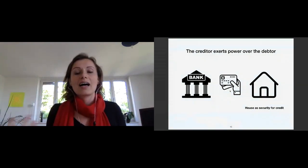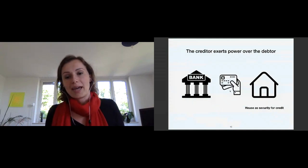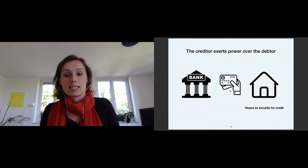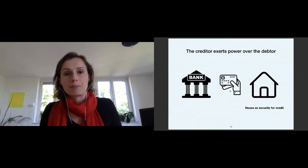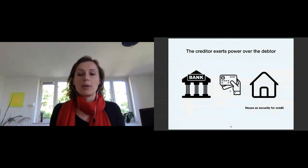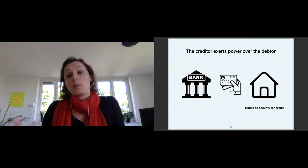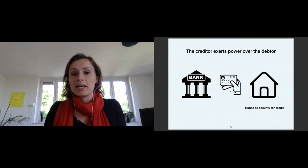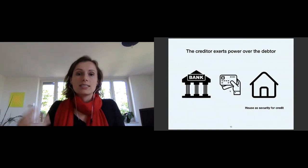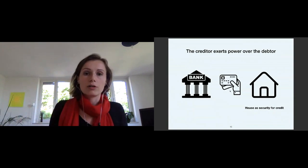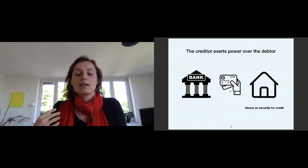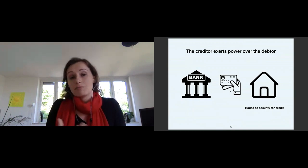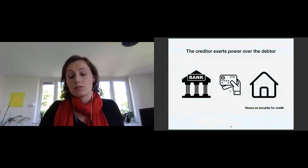Let me explain what debt actually means for a normal person. Say I get a credit from a bank to buy a house — the house is security for my credit. When I cannot pay back my debt, the bank may seize the house or reduce my risk rating. Essentially they have a lot of power over me when I take on debt, and they can do so by just creating this money out of nowhere.